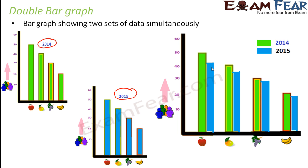Double bar graph is exactly the same concept as that of a bar graph. It is just that here we represent two sets of data. So here, what are those two sets? One set of data is for 2014, the other set of data is for 2015. So in these kinds of scenarios, we make use of double bar graph.